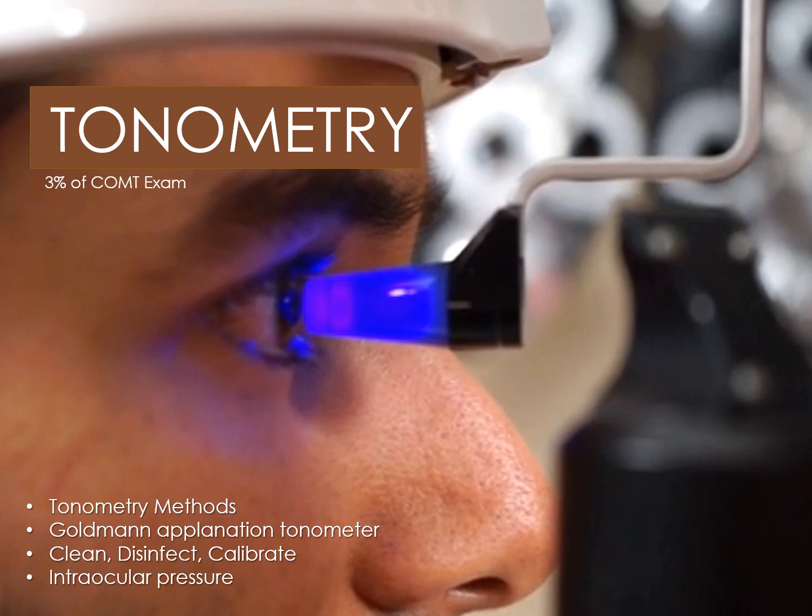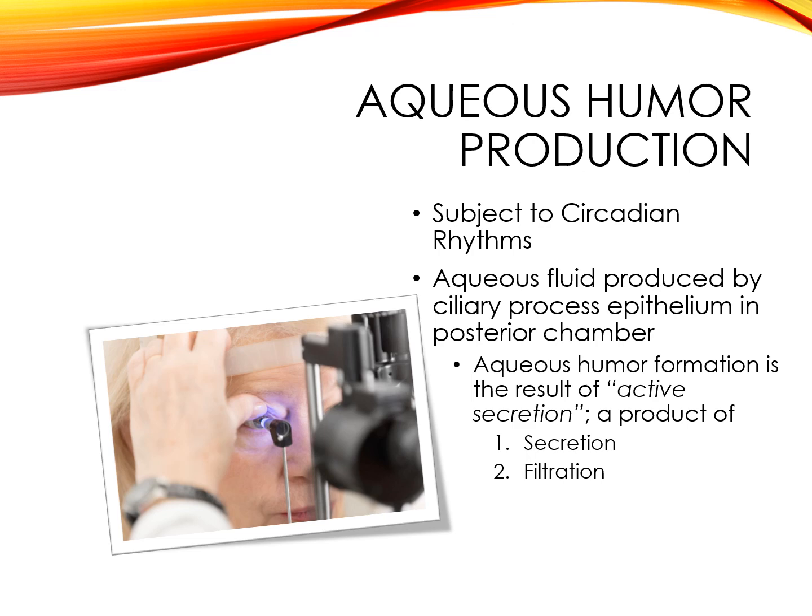Our next section is tonometry. This will comprise approximately 3% of your exam questions. Aqueous humor production is subject to circadian rhythms and is produced by the ciliary process epithelium. The intraocular pressure of the eye is determined by the balance between the amount of aqueous humor that the eye makes and the ease with which it leaves the eye. IOP remains the only significantly modifiable risk factor in the treatment of glaucoma.